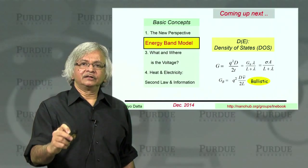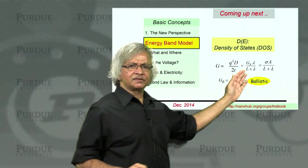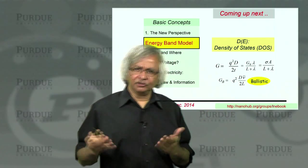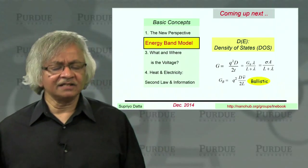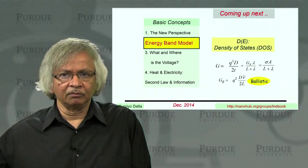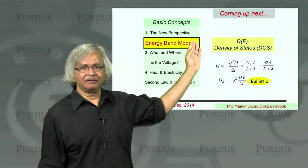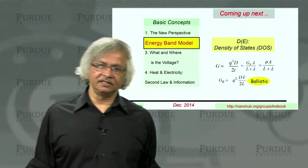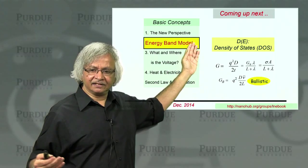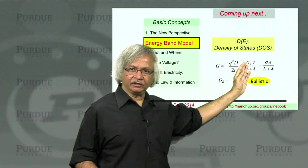That concludes Unit 1 of the course. The discussion was kept general, expressing everything in terms of density of states without specifying its form, so the results apply to any solid—including amorphous materials or molecules. In the next unit, we will adopt the energy band model, widely used for crystalline solids and semiconductors, and apply it to the expressions developed here.